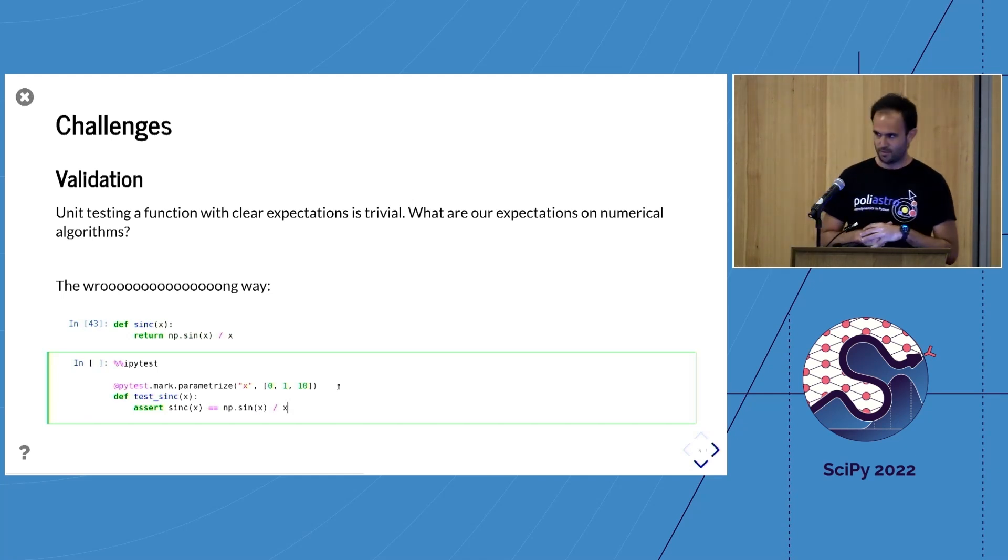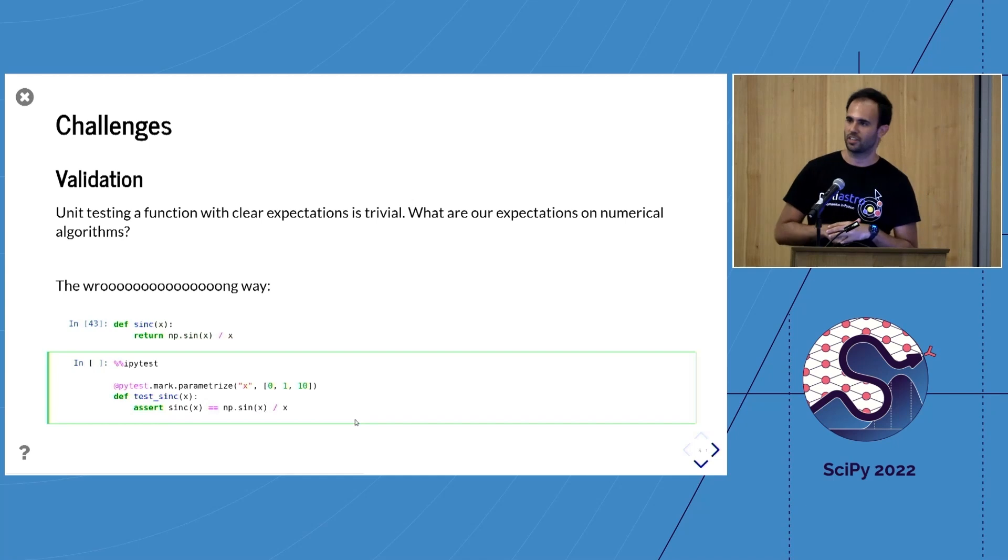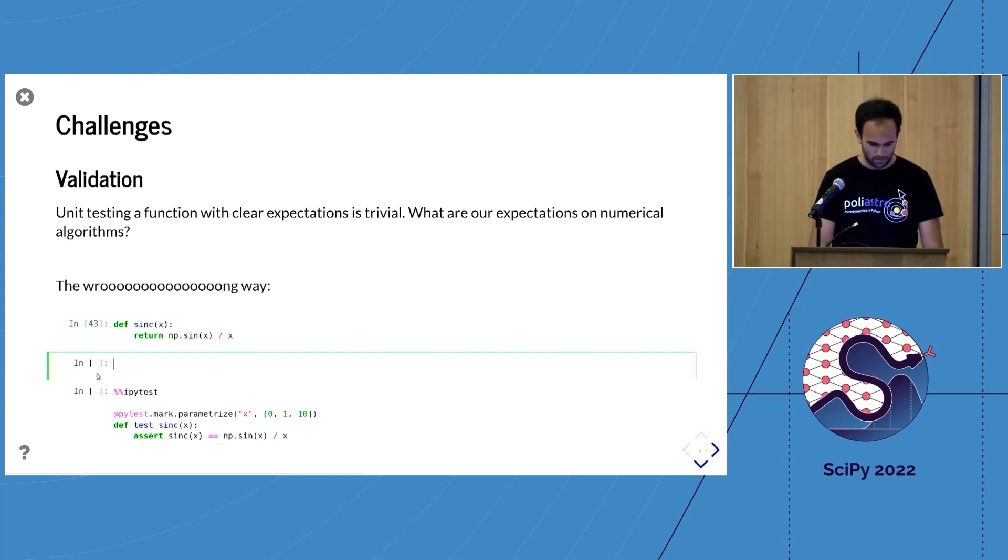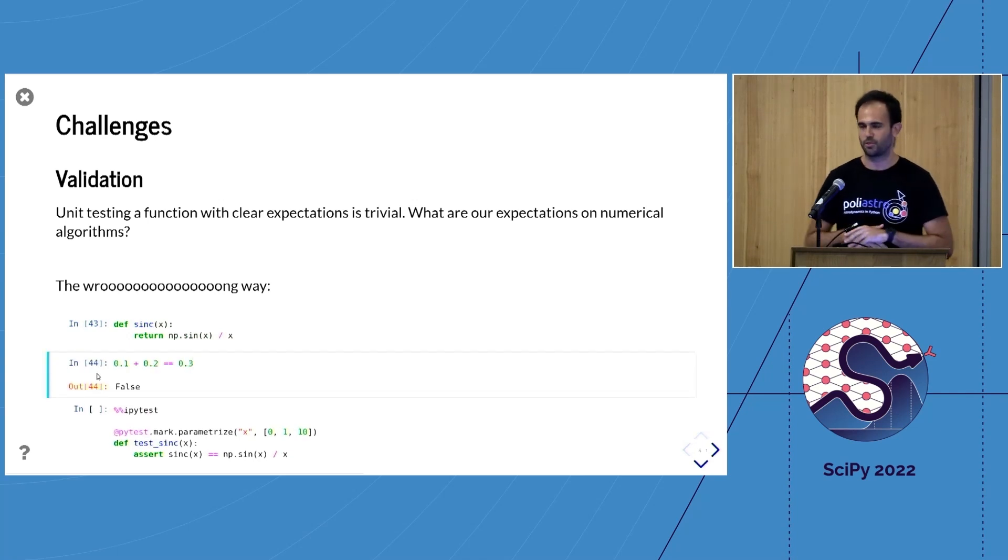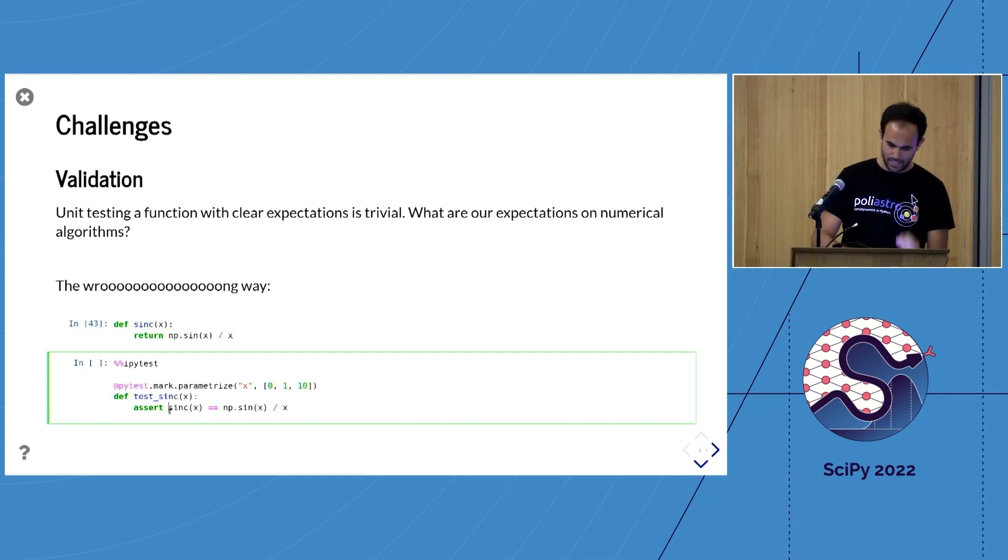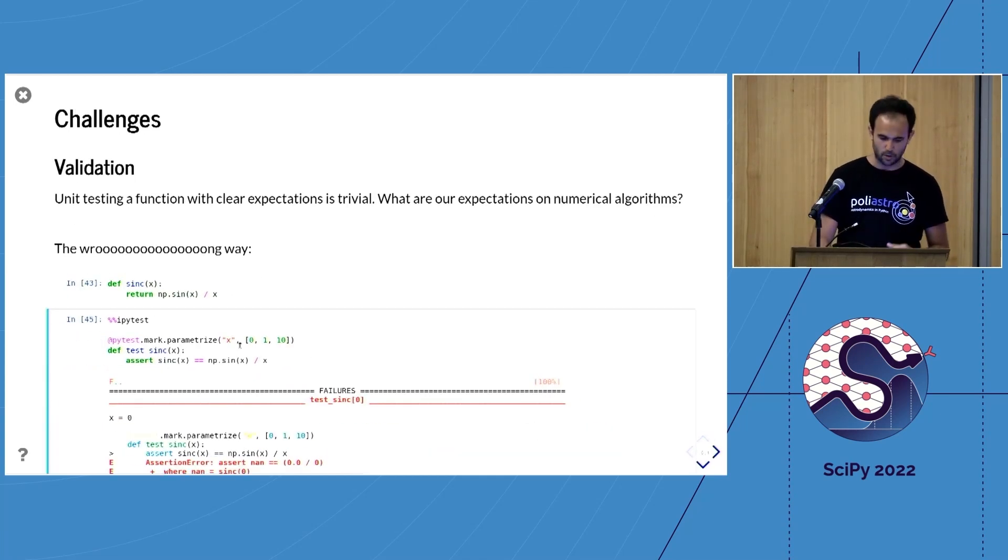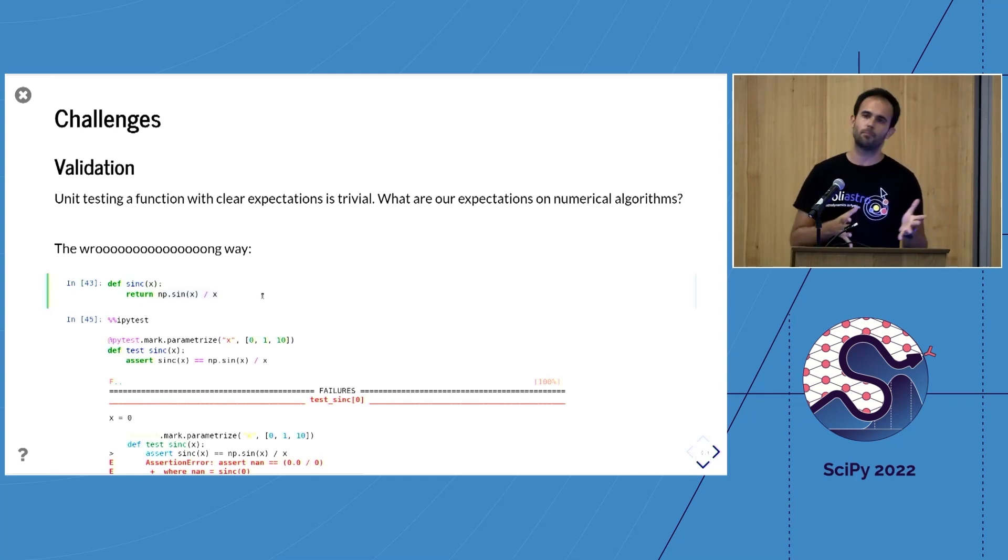You want to write a test for it, so you write a pytest and check that your sinc function is exactly equal to sine of x divided by x, and you're even parameterizing the test for several values of x. This is very wrong at different levels. First of all, there's this exact floating point comparison, which you should never do because remember my favorite magic trick: 0.1 plus 0.2 is not equal to 0.3. If this is the first time you see this, welcome to hell. But apart from that, for x equals 0, this gets not a number as a result, and exact floating point comparison also breaks in that case.